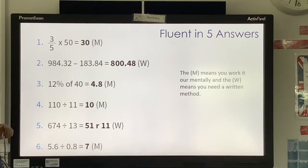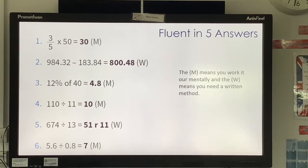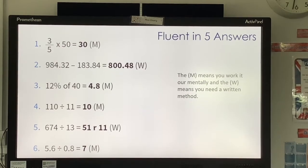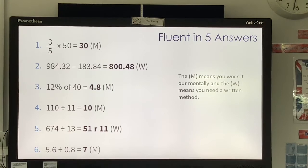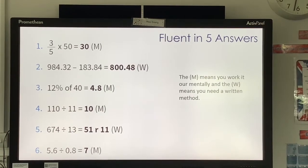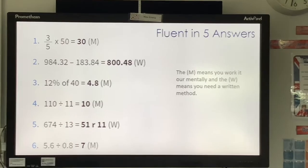12% of 40 is 4.8. Number four, 110 divided by 11 is 10. 674 divided by 13 is 51, remainder 11. And 5.6 divided by 0.8 is 7. Well done if you got them all correct.